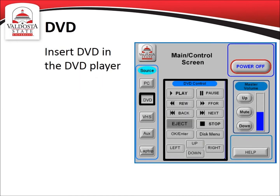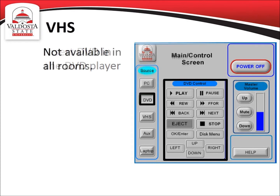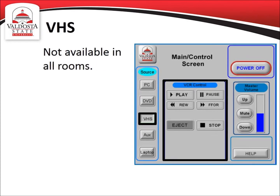The DVD button switches the source to DVD and displays the DVD option menu. You will insert DVDs in the DVD player located underneath the instructor's workstation, and use the DVD menu buttons to control the DVD player. The VHS button switches the source to VHS and displays the VHS option menu. You will insert tapes in the VHS player located underneath the instructor's workstation, and use the VHS menu buttons to control the VHS player. You will want to keep in mind that not all classrooms have a VHS player.